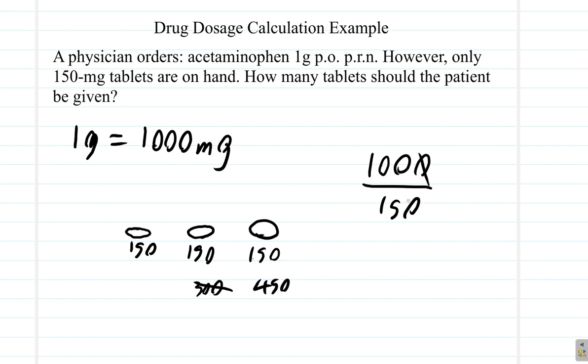10 into 1000 is 100. 10 into 150 is 15. 5 into 100 is 20. 5 into 15 is 3. 20 divided by 3.